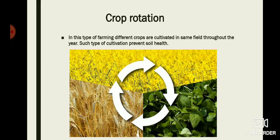Soil conservation means not only prevention from erosion but also maintaining the health of the soil. If the same type of crops are grown in the same field throughout the year, the nutrients of the soil are not preserved. Different types of crops provide nitrogen and other nutrients to the soil, so they can be grown in alternate seasons. In this way, the health of the soil remains preserved through crop rotation.